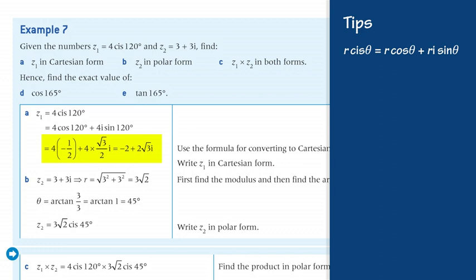This equals 4 multiplied by negative one-half plus 4 multiplied by √3 divided by 2 times i, which equals negative 2 plus 2√3·i.